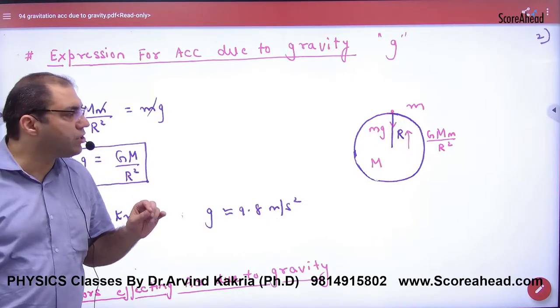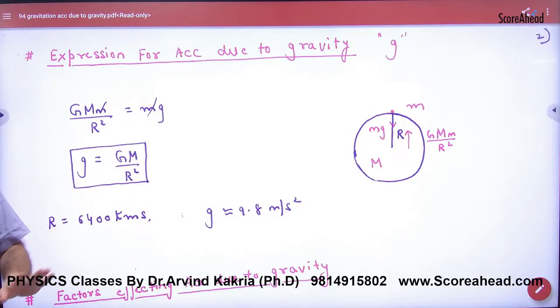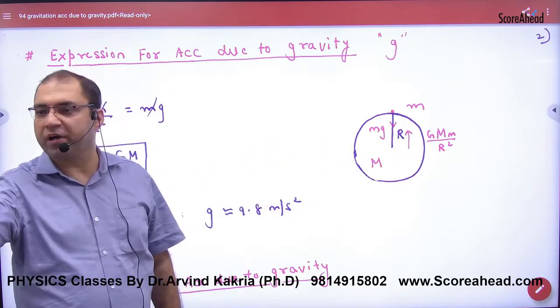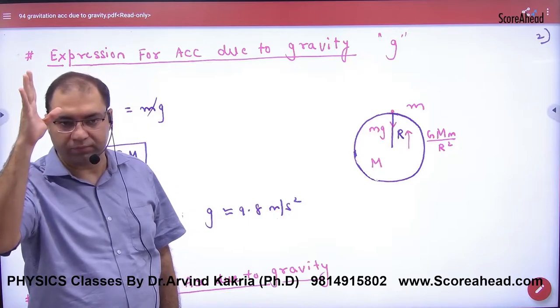What is the expression for acceleration due to gravity? Think of this earth. A point mass is put on the earth - think of an apple or any mass, a very small mass.